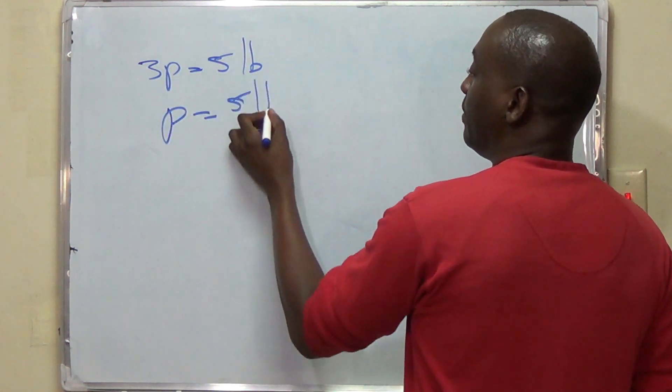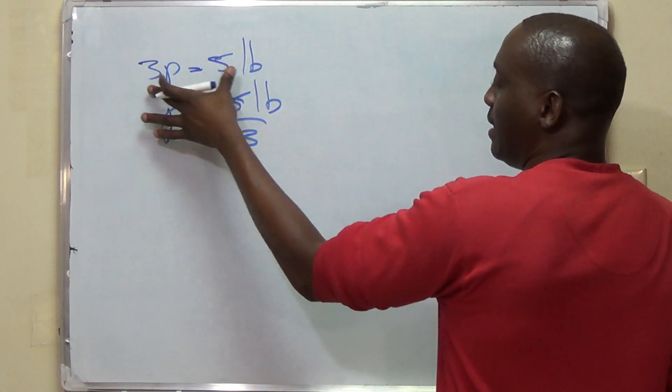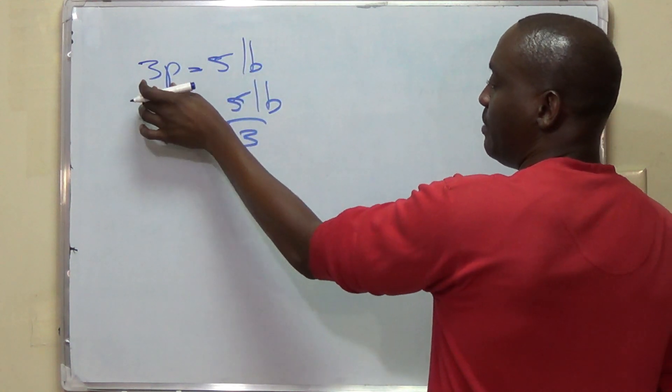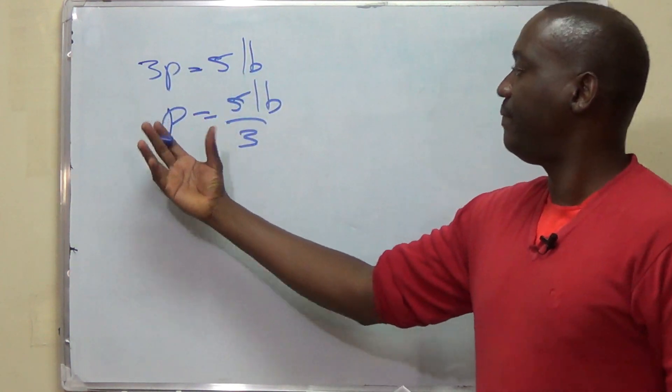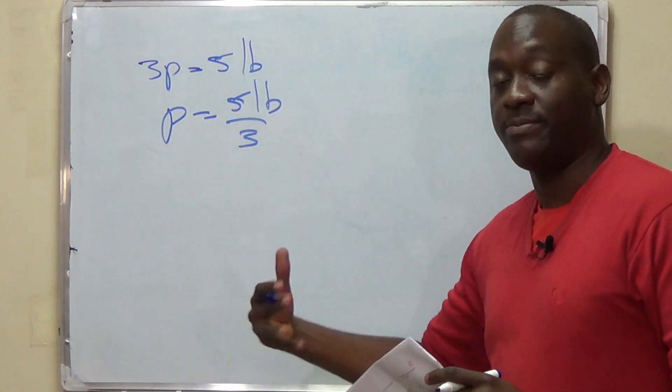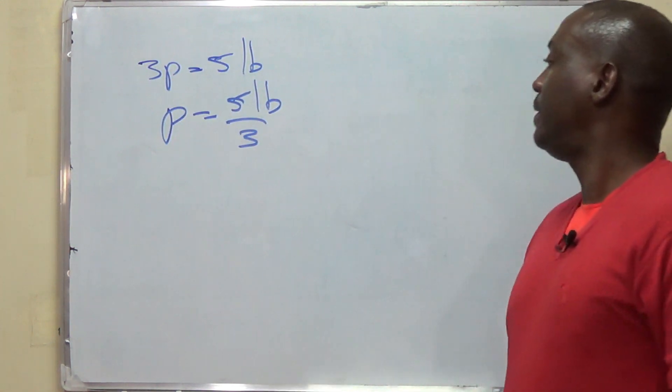So, in other words, having been told that the weight of 3 pineapples is 5 pounds, we then express this as an algebra equation. And then we make P the subject of the formula. P, of course, being the weight of 1 pineapple.